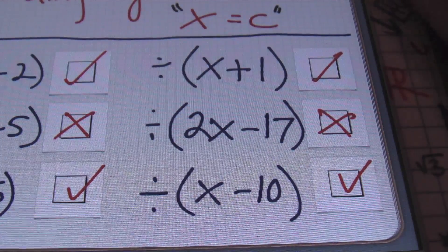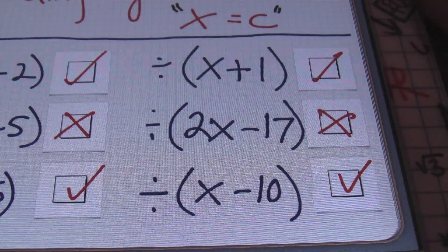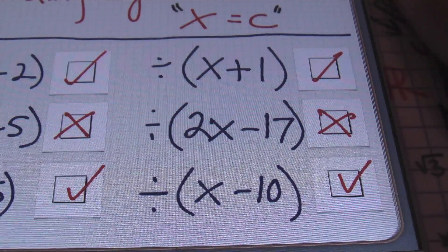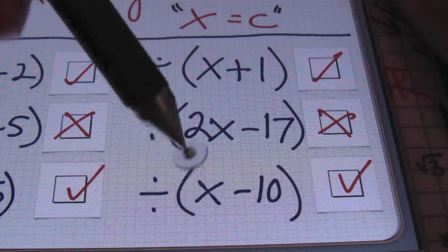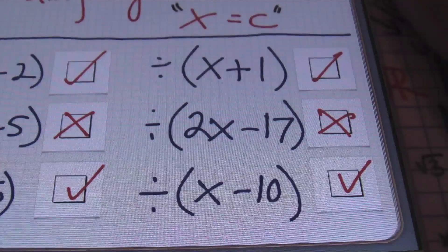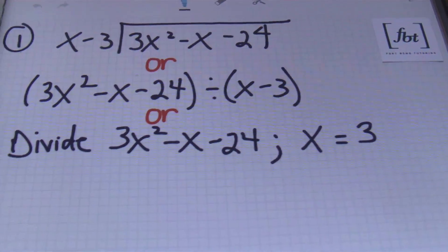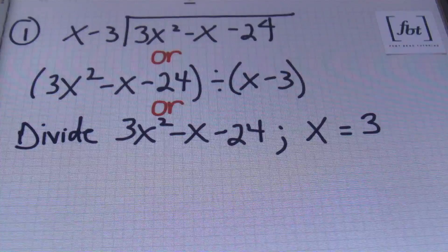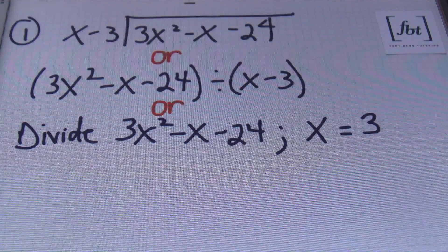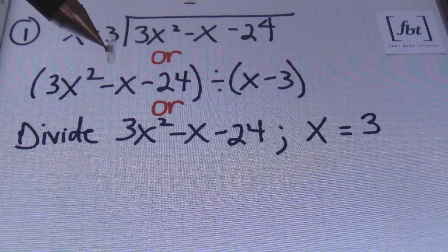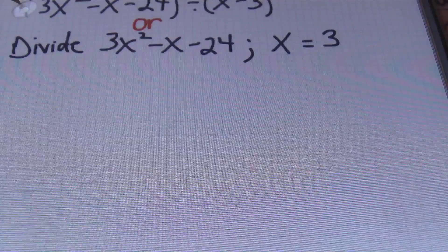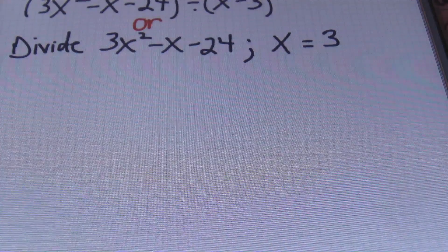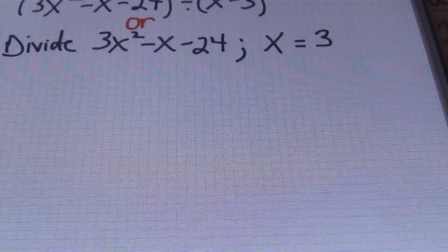Now, ladies and gentlemen, there are ways to use synthetic division in this form. However, I just don't think it's that efficient. So, since I'm always pushing for accuracy and also consistency in the process, I'm going to ask you guys to only use synthetic division when it's in that form of x plus c. Alright, but you have free will still, so let's check out some problems. In problem number 1, ladies and gentlemen, I'm dividing 3x squared minus x minus 24 by the divisor of x minus 3.